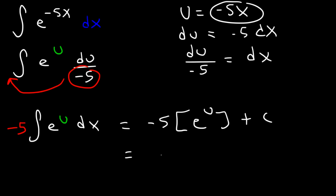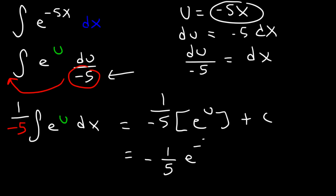The constant out front should be negative 1 over 5, because the 5 is on the bottom. So the final answer is negative 1 over 5 times e to the negative 5x plus c, which is the same as e to the negative 5x divided by negative 5 plus c.